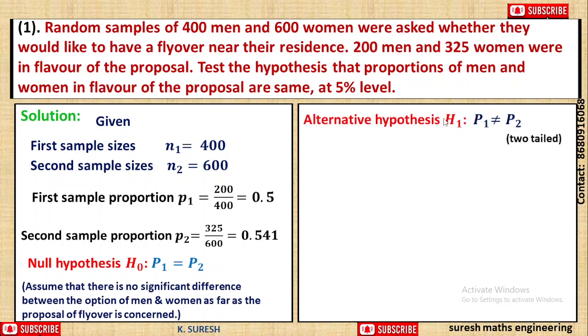For the alternative hypothesis, we will set the opposite. H1: p1 is not equal to p2. Since we have this alternative hypothesis, we use a two-tailed test.